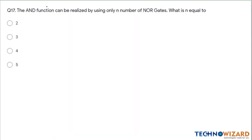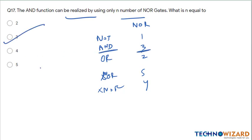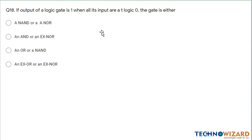Question number 17: the AND function can be realized using only N number of NOR gates. From the table of NOR gate implementations — NOT, AND, OR, XOR, XNOR require 1, 3, 2, 5, 4 NOR gates respectively. Therefore total three NOR gates will be used to implement the AND function. Therefore option B is the correct answer.